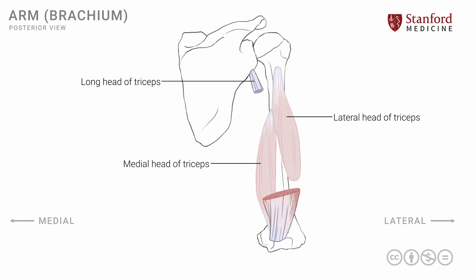In order to understand some of these neurovascular structures, we need one other muscle as a landmark muscle, which is the teres major muscle. The teres major is a muscle that attaches onto the scapula — the inferior posterior part of the scapula — and the fibers then run laterally and superiorly to attach onto the anterior part of the humerus. As it does this, it has a very crucial relationship to the long head of the triceps, in that the fibers of teres major are on the anterior side of the long head of the triceps.